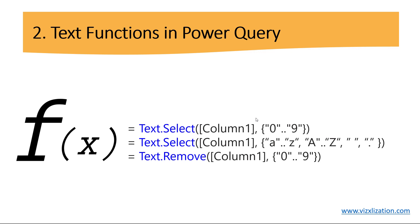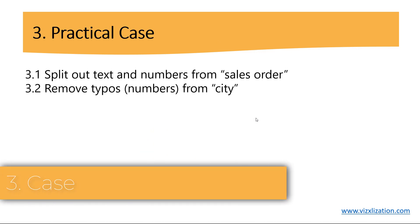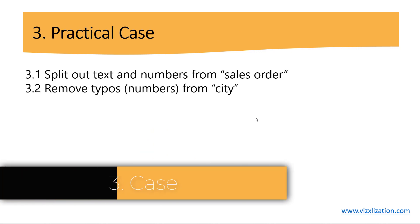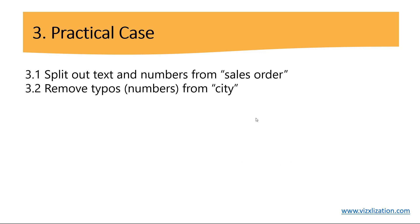Now let's move on to the practical case. We have two questions. The first is to split out text and numbers from the sales order column. The second is to remove typos — and in this case the typos are numbers found in the city column. Please keep this in mind as we jump into Power BI Desktop.